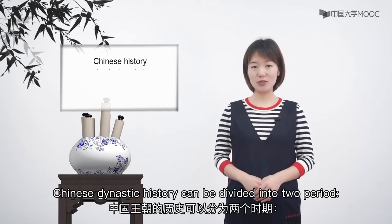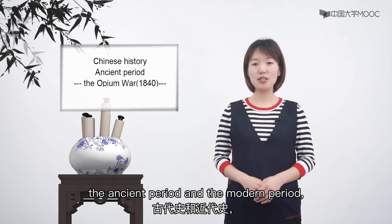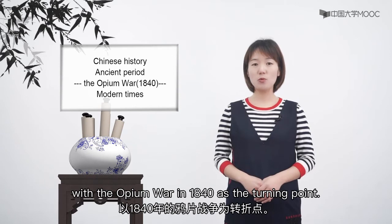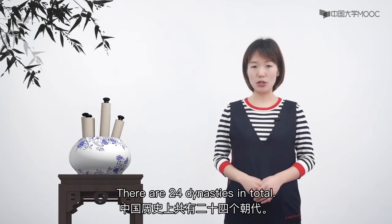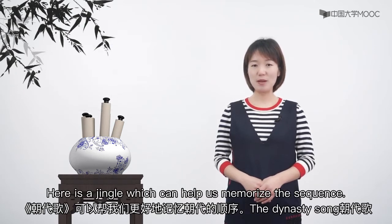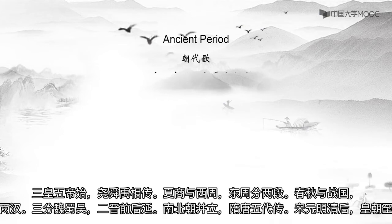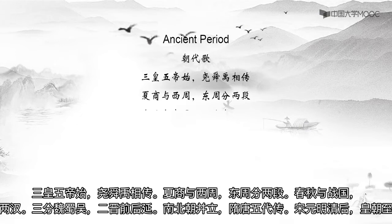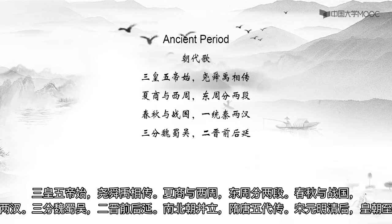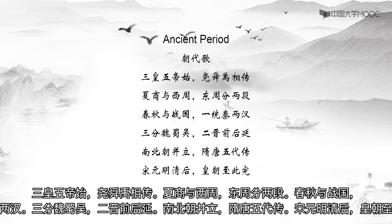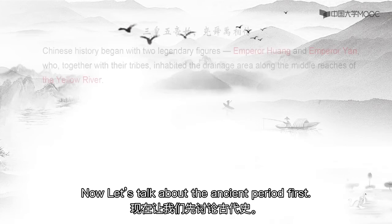Chinese dynastic history can be divided into two periods — the ancient period and the modern period — with the Opium War in 1840 as the turning point. There are 24 dynasties in total. Here is a jingle which can help us memorize the dynasties, the dynasty song: 朝代歌 三皇五帝始，尧舜禹相传，夏商与西周，东周分两段，春秋与战国，一统秦两汉，三分魏蜀吴，二晋前后延，南北朝并立，隋唐五代传，宋元明清后，皇朝至此完.